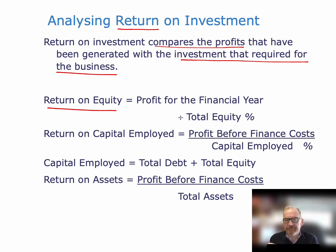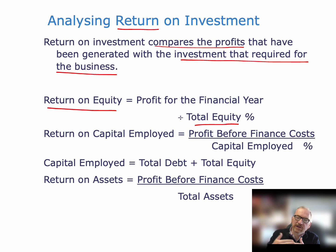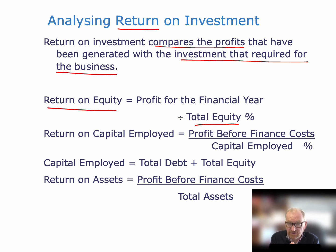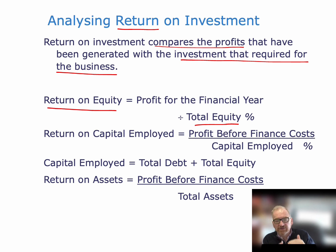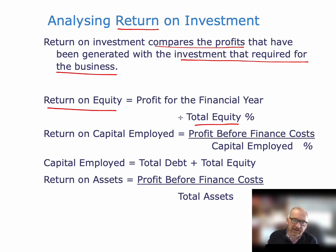Return on equity is equal to profit for the financial year divided by total equity. This looks at the bottom of the income statement — the profit for the financial year, after all expenses have been taken off — divided by total equity, which is the owner's investment in the business. Note that interest has already been taken out here, because it's profit for the financial year after interest. So profit for the financial year is what's left for the owners.